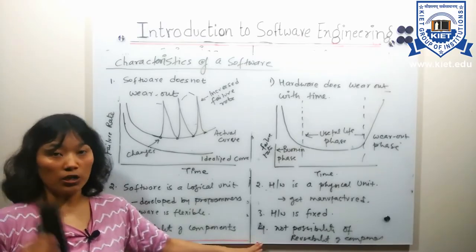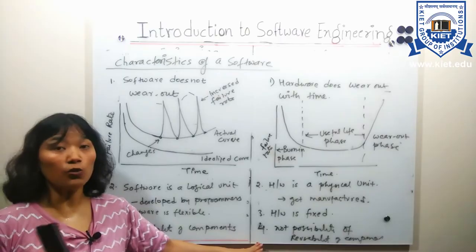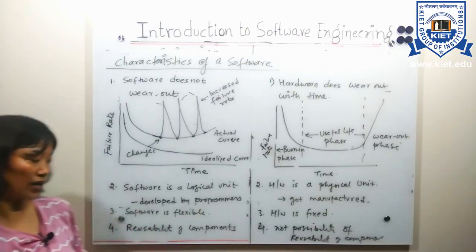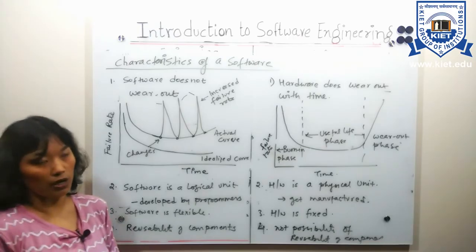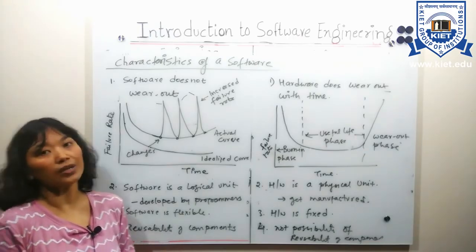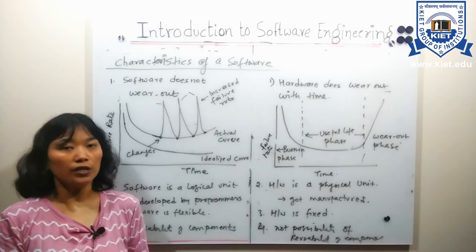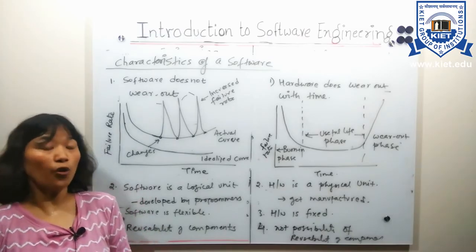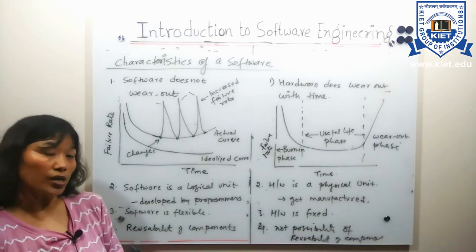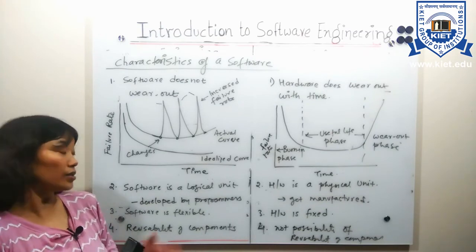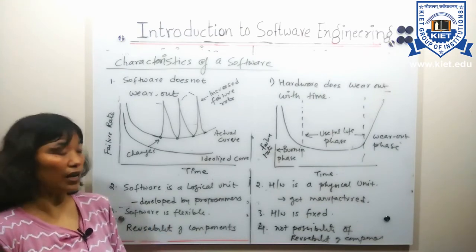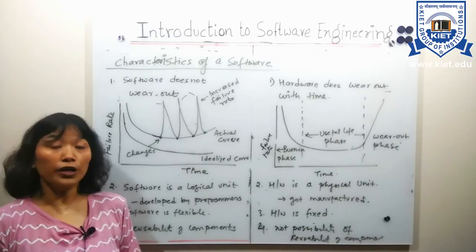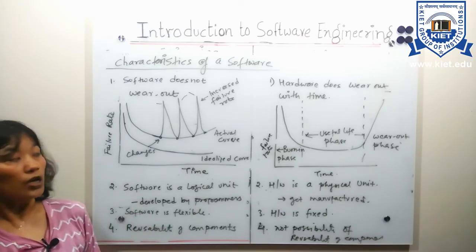The possibility of reusing any component of hardware may not be feasible, but in the case of software it is possible. To summarize, the four characteristics of software are: first, software does not wear out — it only deteriorates; second, software is a logical unit; third, software is flexible; and fourth, software allows reusability of components.